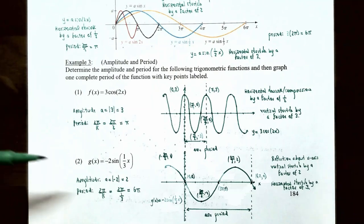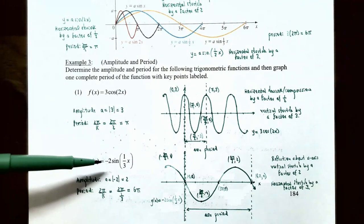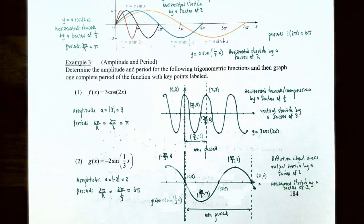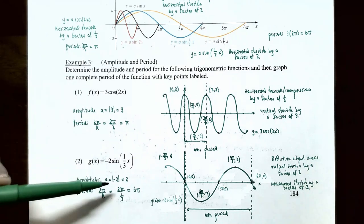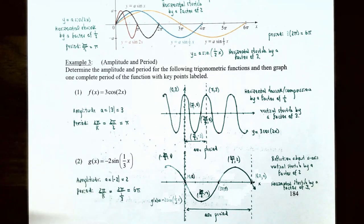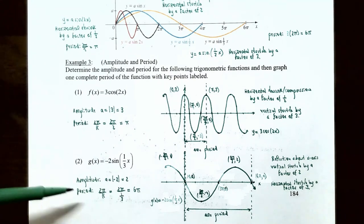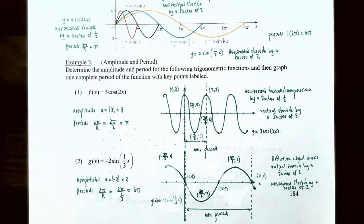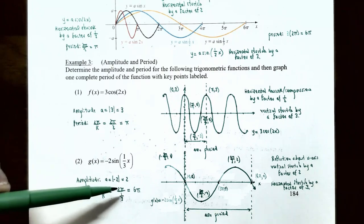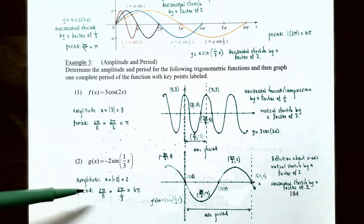Now for number 2: g(x) = -2·sin(⅓x). The amplitude is |-2| = 2, so the graph ranges between y = -2 and y = 2. The period is 2π ÷ (⅓) = 6π, meaning the graph repeats values after 6π radians. The negative outside the sine function causes a reflection about the x-axis, the 2 outside causes a vertical stretch by a factor of 2, and ⅓ inside causes a horizontal stretch by a factor of 3.